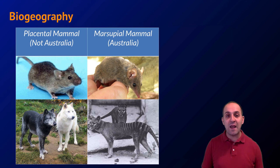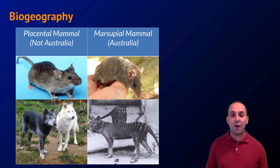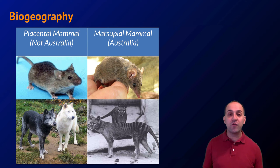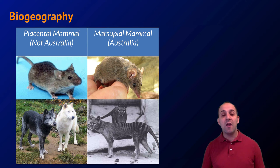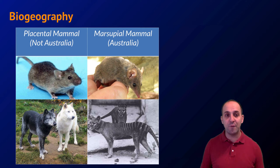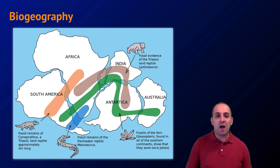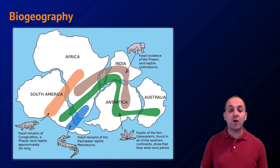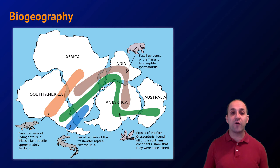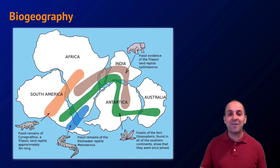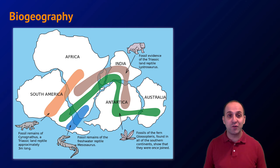The organisms that we find in any one particular area of the planet tend to be more closely related to each other evolutionarily than to organisms found in other areas. When we combine biogeography with our understanding of plate tectonics, we start to understand the distribution of fossils we see across all the different continents. Just because two continental areas are not currently close together does not mean that they were not close together at some point during geological time.